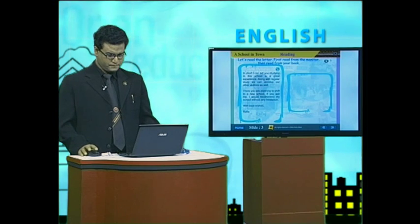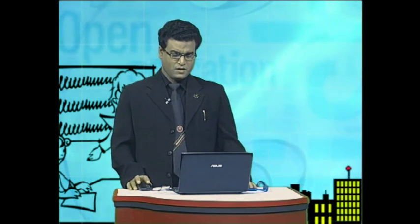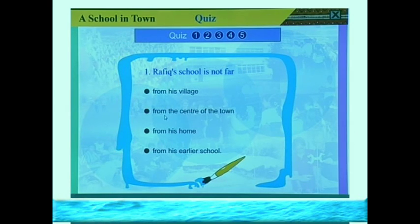Let us go to the multiple choice questions. Question 1: Rafik's school is not far from — (a) his village, (b) the center of the town, (c) his home, (d) his earlier school. From the text we know that Rafik's school is not very far from the center of the town. So the correct answer is (b): from the center of the town.